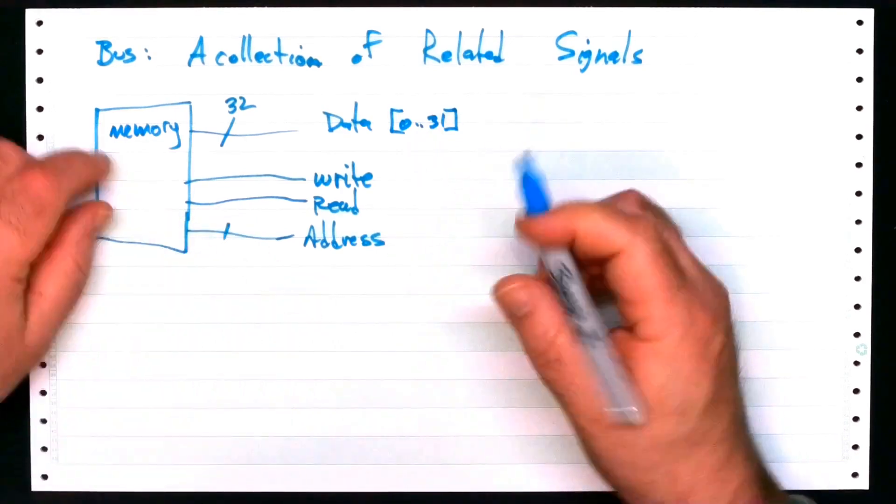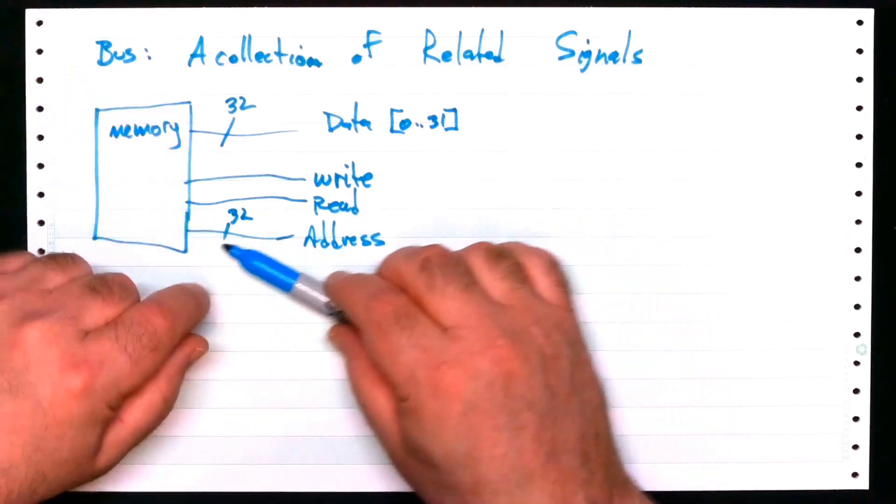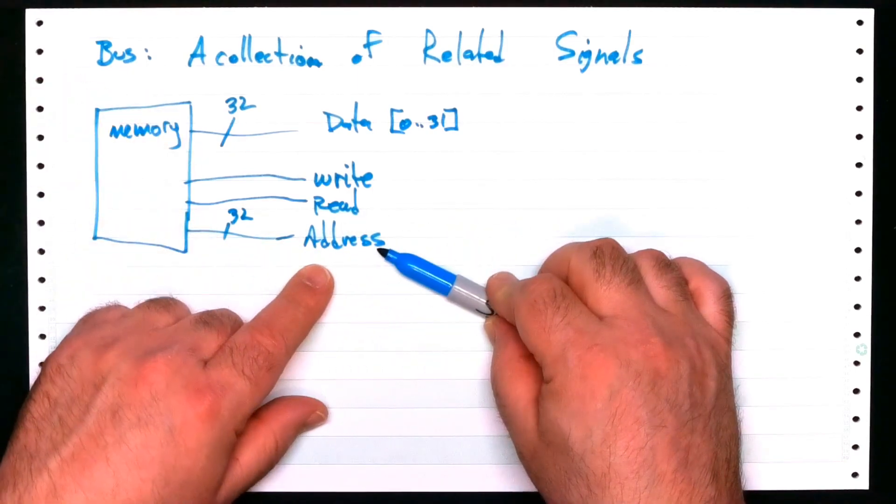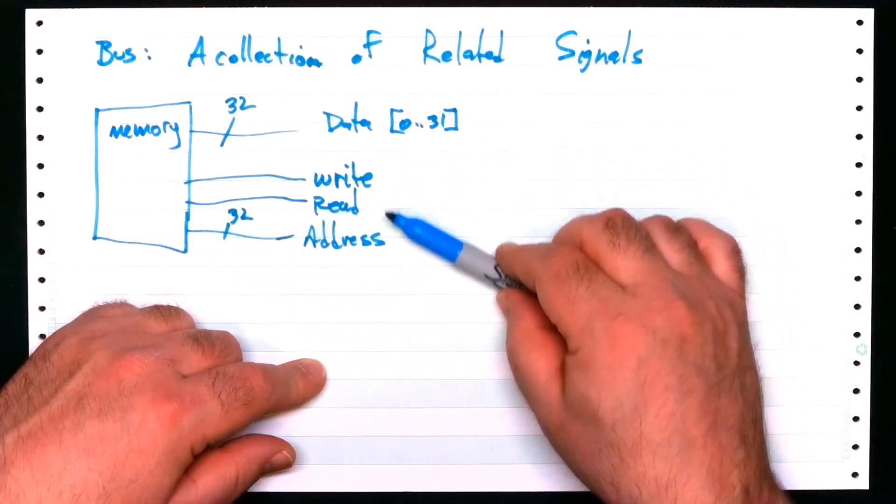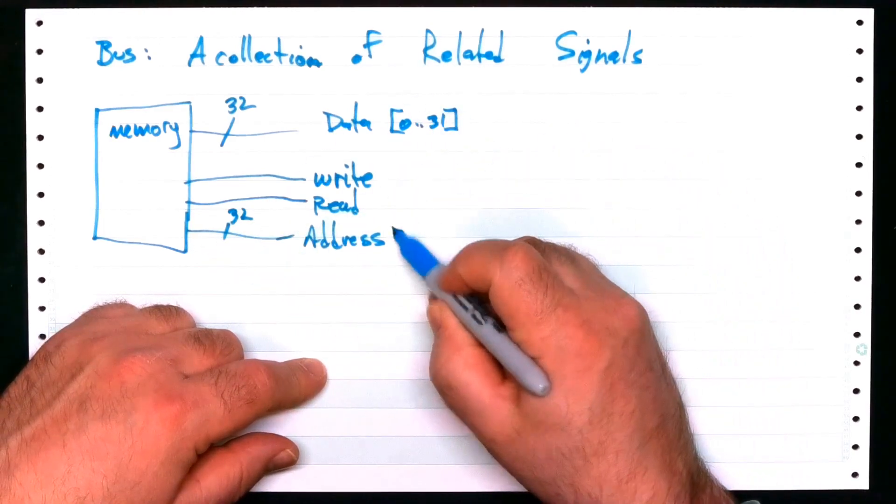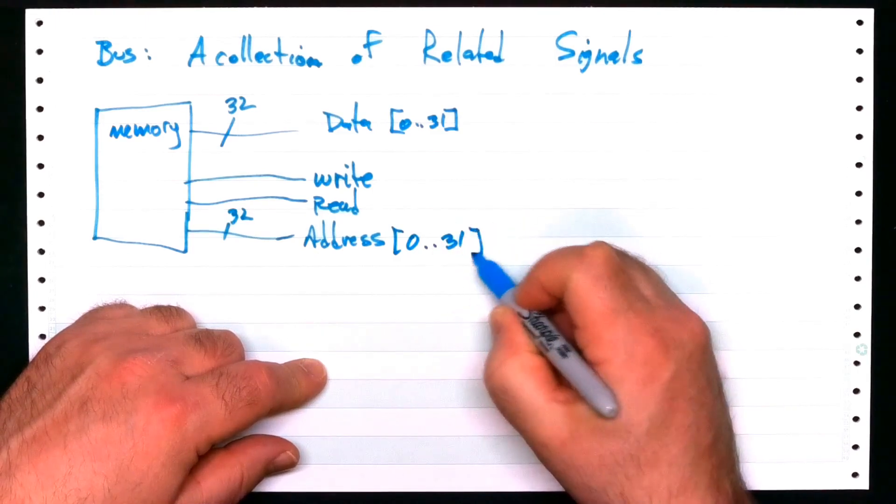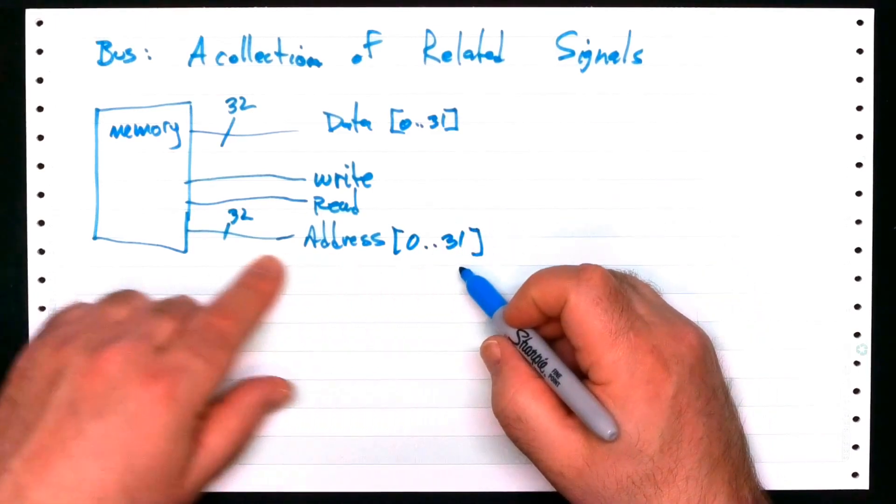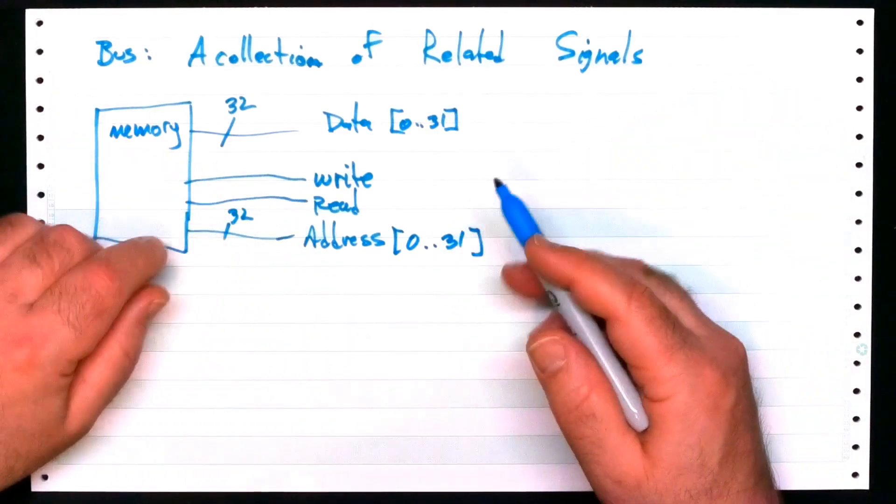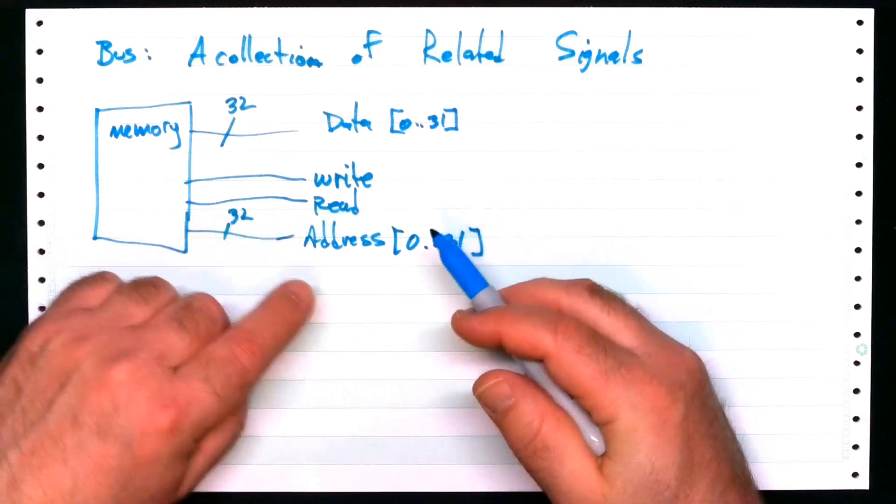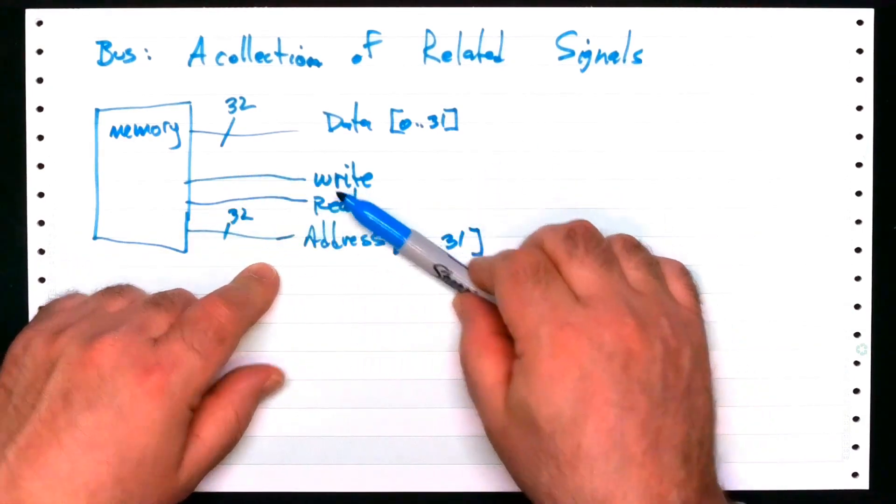Same thing happens with address lines. Let's say I have 32 bits of signals that I use to convey the address for this transaction that I want to commit. So I'm going to again assume they will be numbered 0 to 31. Now read and write, again, if you're familiar with this, these are single wires very often.